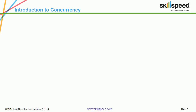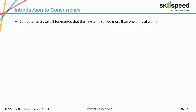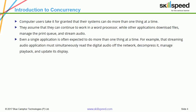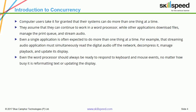Let us now look at the Introduction to Concurrency. Computer users take it for granted that their systems can do more than one thing at a time. They assume that they can continue to work in a word processor while other applications download files, manage the print queue, and stream audio. Even a single application is often expected to do more than one thing at a time.